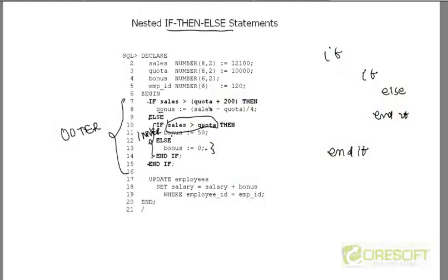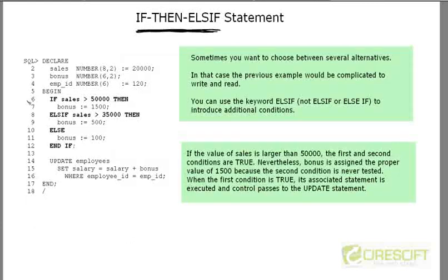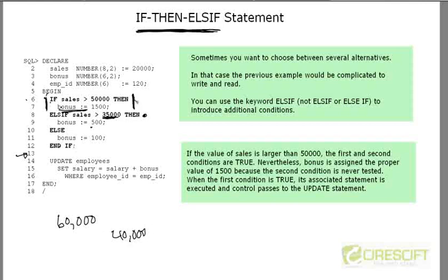That is why Oracle came up with a new structure called IF-THEN-ELSIF. The same program we wrote can be rewritten using it. For example: if sales is greater than 50,000, then some bonus; elsif sales is greater than 35,000, then something else, and so on. If the sales value is 60,000, this first condition is satisfied and control jumps directly to line 38 — it does not check the remaining conditions even if they would also be satisfied. Once a condition is satisfied, it exits the IF-END IF block. For a value of 40,000, the first condition fails, and it moves to the ELSIF block where the appropriate condition is satisfied.